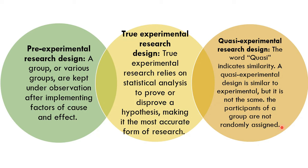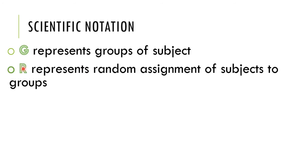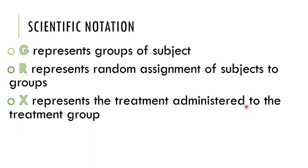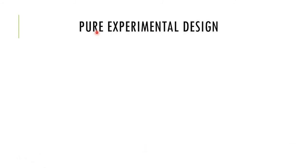Scientific notation in experimental research: R represents a group of subjects randomly assigned. X represents the treatment — what you administer and apply. O represents the observation of the dependent variable, which can be either pre-test or post-test.